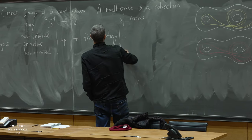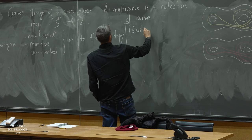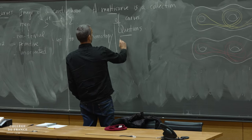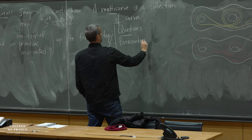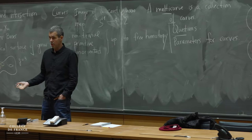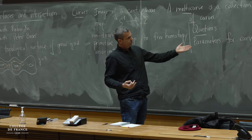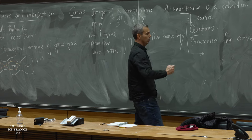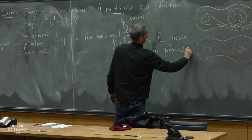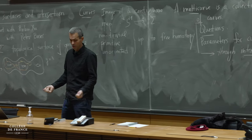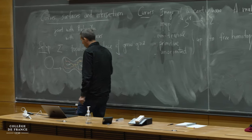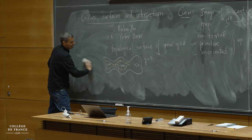My guiding question throughout the talk is: is there a good parameter set for the space of all curves? There are many ways to answer this question, but the way I'm going to treat it is through intersection — specifically, intersection with other curves.